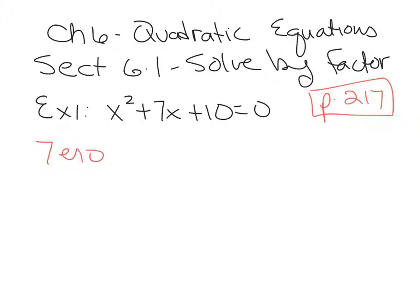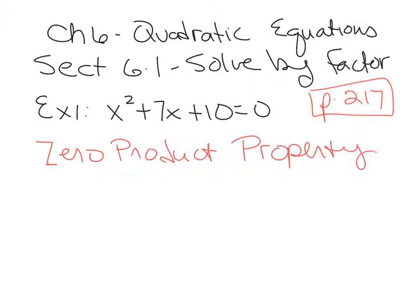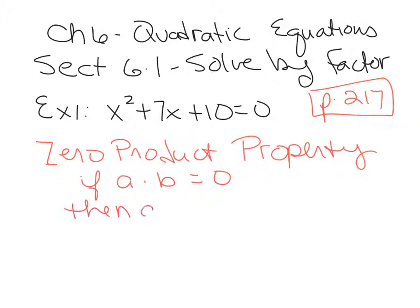Let's review the zero product property right now. It states that if two things are multiplied together and the product is 0, then it follows that one or both of these have to equal 0. The only way to get a product of 0 out of two factors being multiplied is if one or both of them equal 0. That's the zero product property.